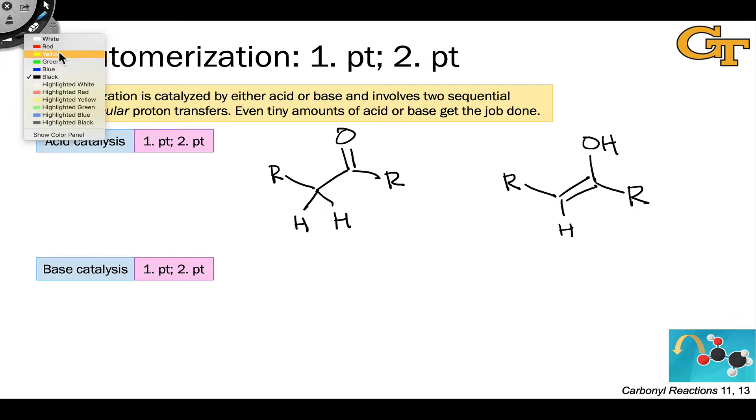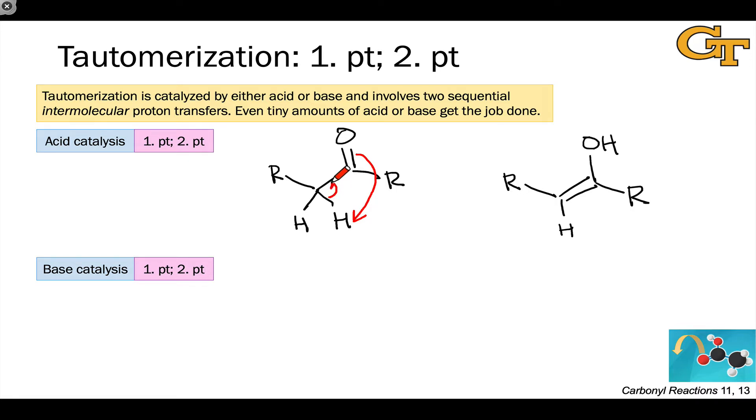And we could even do this in a single elementary step through some curved arrow gymnastics. Protonate here, actually let's use the CO double bond, save us a step. Use the CO double bond to protonate oxygen and then at the same time kick the CH electrons into a double bond.